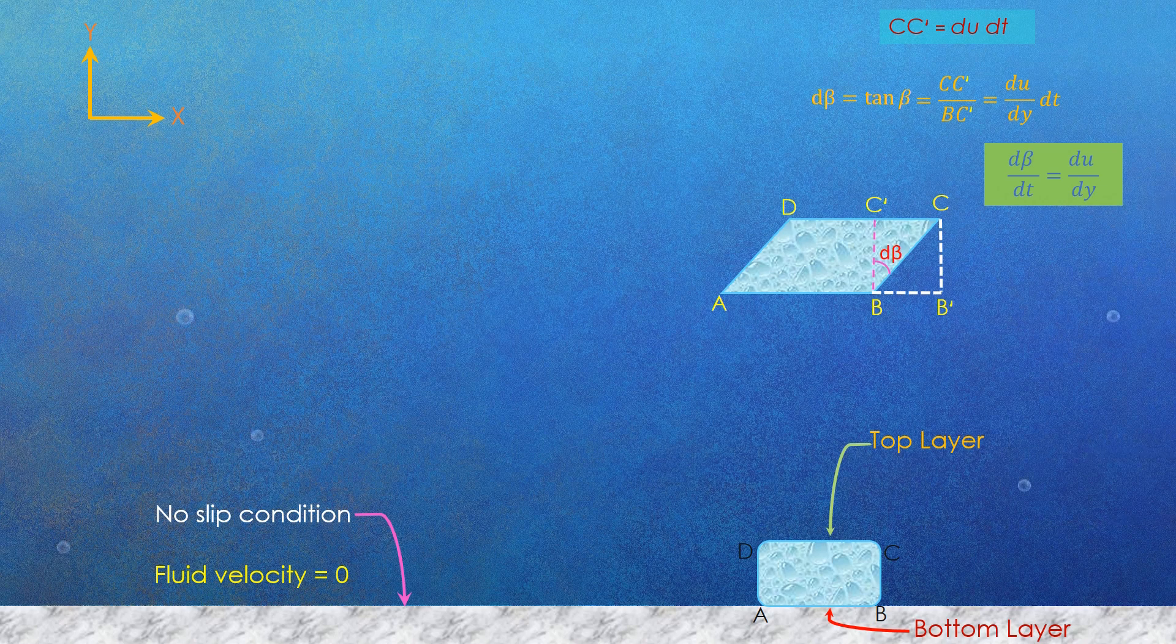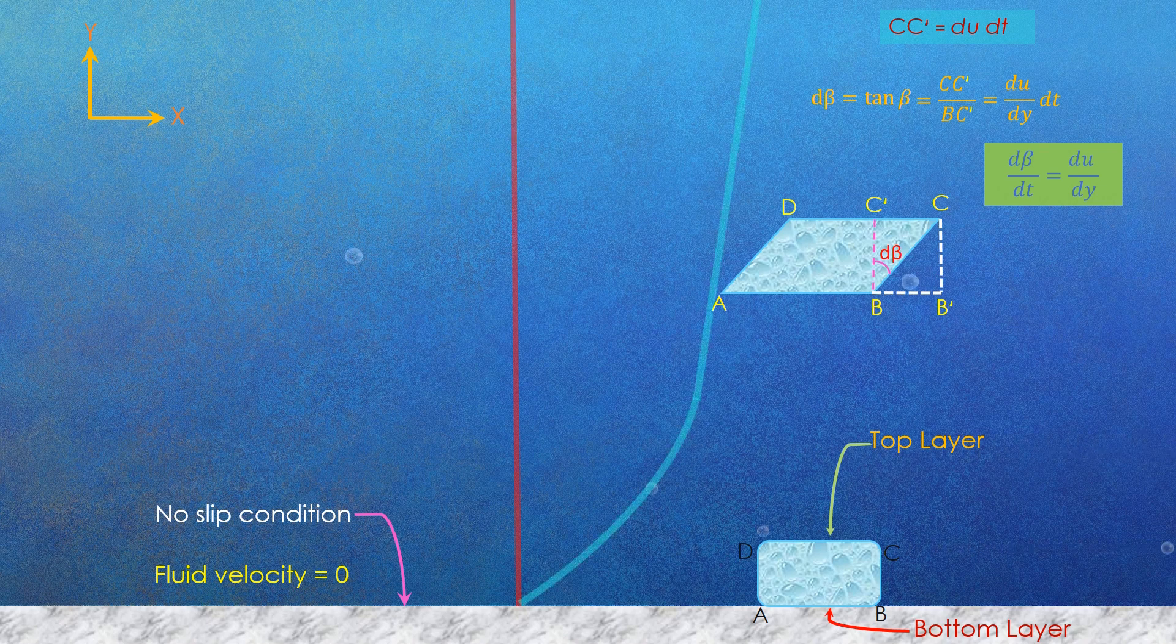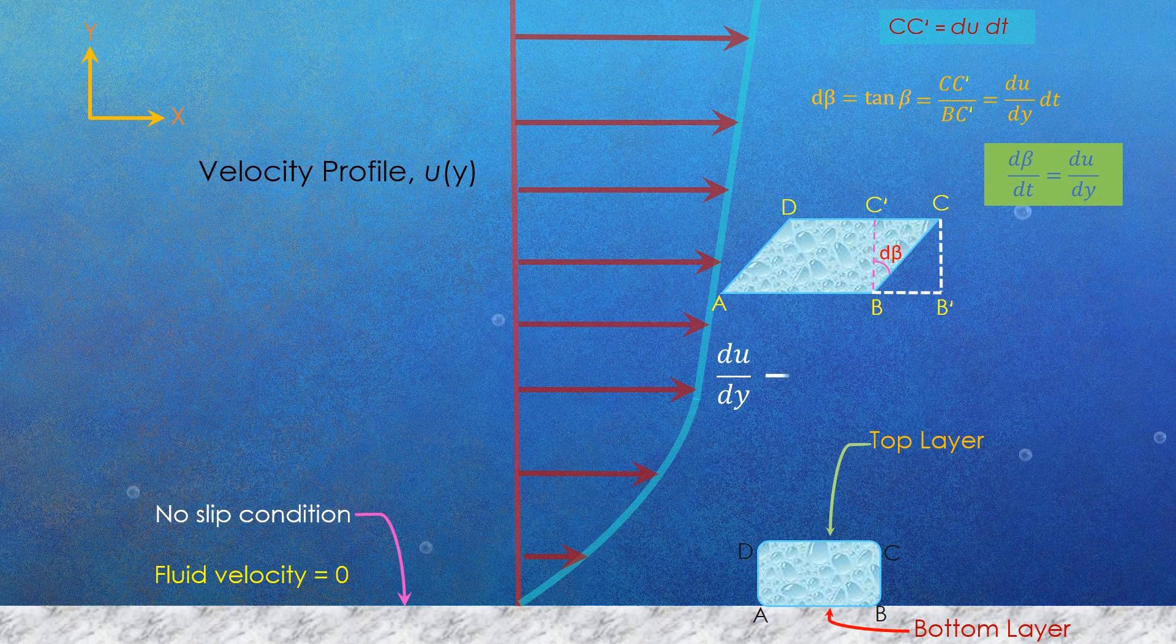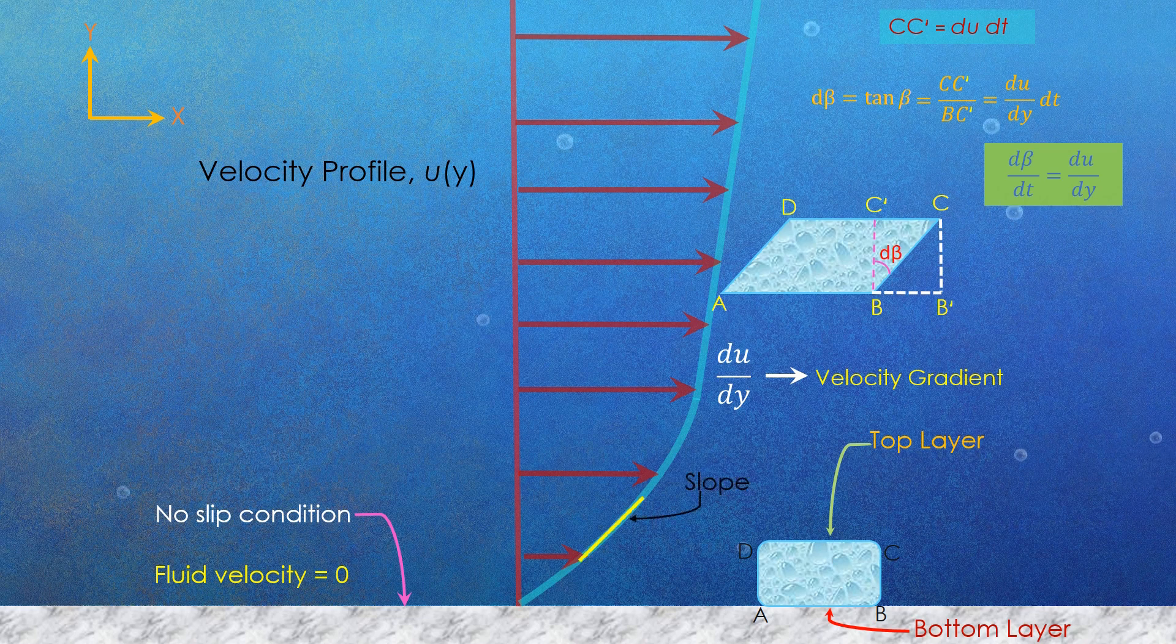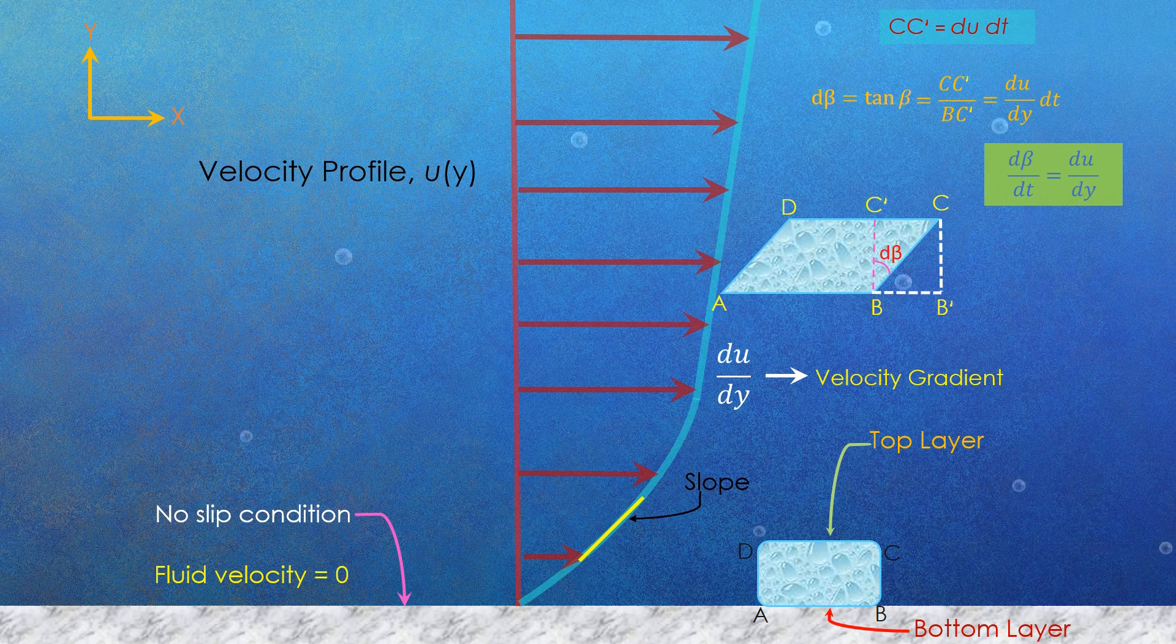The shear stress between the fluid layers will make the fluid velocity profile look like this. The magnitude of the shear stress between the layers will be linked to the slope of the velocity profile du by dy, where u is the fluid velocity and y is the vertical distance from the plate surface. This slope is sharp near the plate surface as the fluid velocity is changing very suddenly, so here the shear stress between the fluid layers is very large,